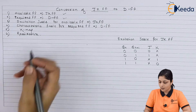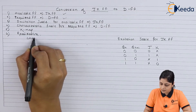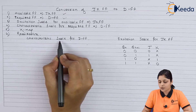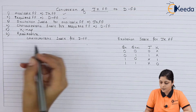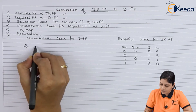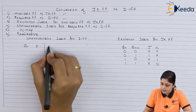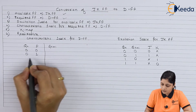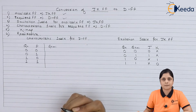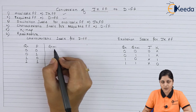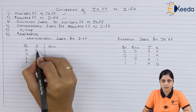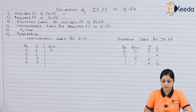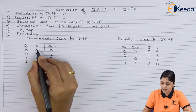Now we are going to draw the characteristic table for the D flip-flop. The inputs are Qn and D, and the output is Qn+1. The possible combinations are 0-0, 0-1, 1-0, and 1-1. At the output side, whatever D is present at the input side, the same value you will get at the output. So D=0 means Qn+1=0, and similarly for 1.